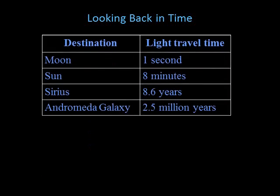Light has a finite speed, so it takes a certain amount of time for light to travel from an object to us, even for close objects — you never see anything in real time. Consider the Moon: it takes light from the Moon one second to reach us on Earth, and it takes light from the Sun about eight minutes. This means if something really unusual happened right now on the Sun, we would not know about it for another eight minutes.